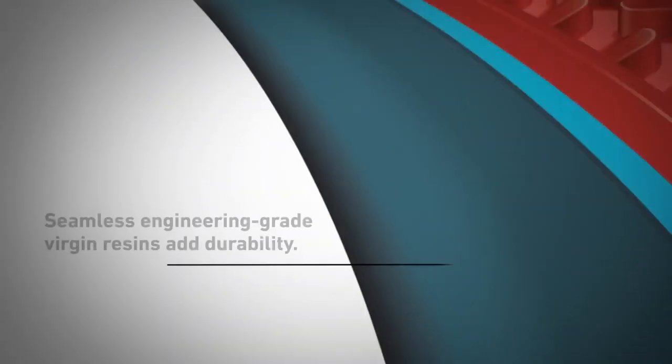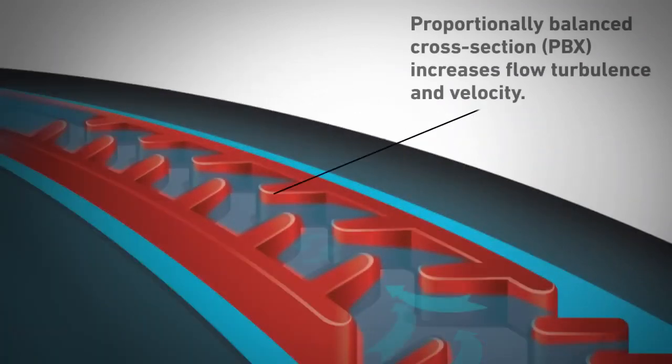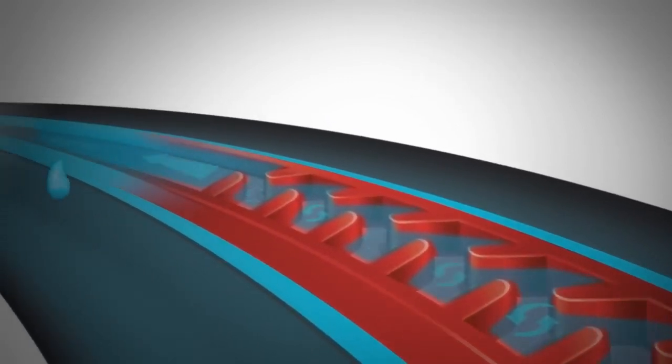The seamless tape is constructed from engineering grade virgin resins to add durability. As water flows through the tape, it encounters the proportionally balanced cross section. This section optimizes turbulence to regulate water flow and ensure accurate water delivery from every emitter to every plant.